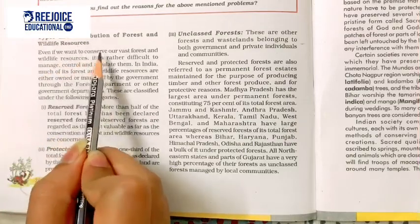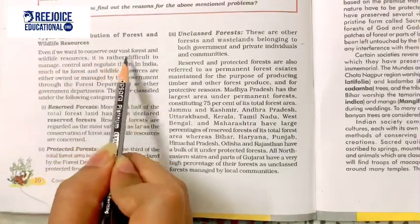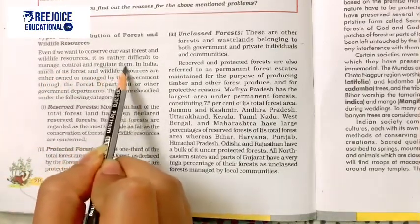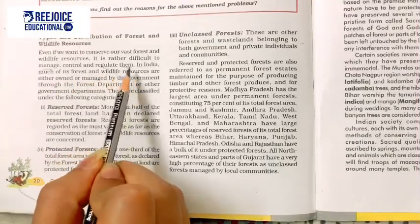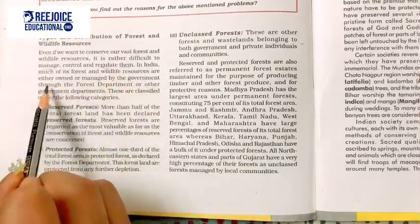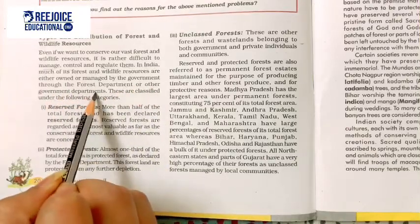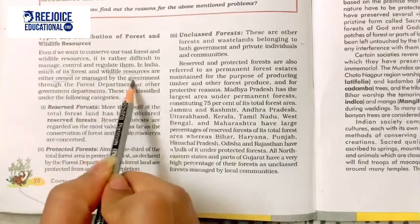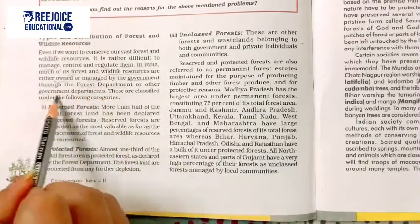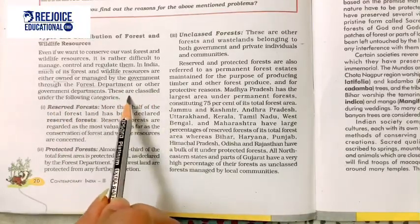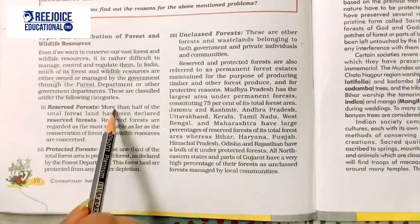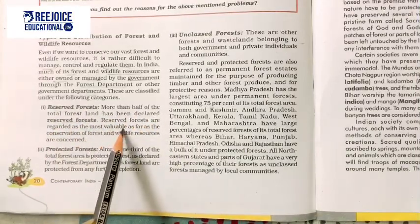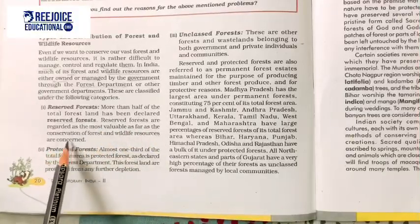Even if we want to conserve our vast forest and wildlife resources, it is rather difficult to manage, control, and regulate them. In India, much of its forest and wildlife resources are either owned or managed by the government through the Forest Department or other government departments. These are classified under the following categories: One is Reserve Forest — more than half of total forest land has been declared reserve forest, regarded as the most valuable for conservation of forest and wildlife resources.